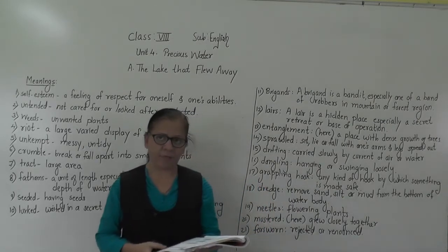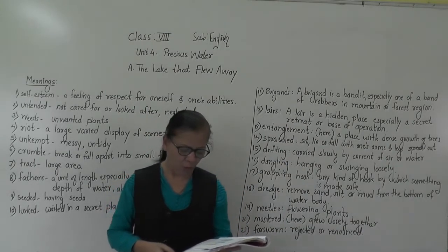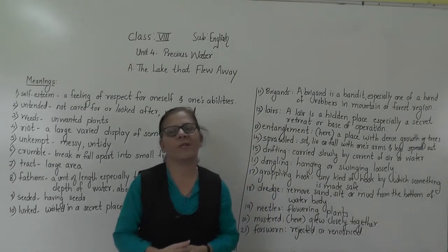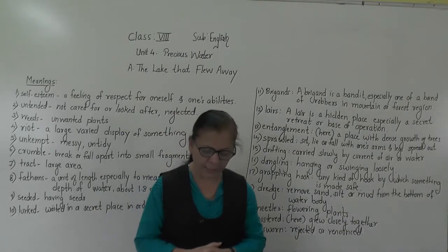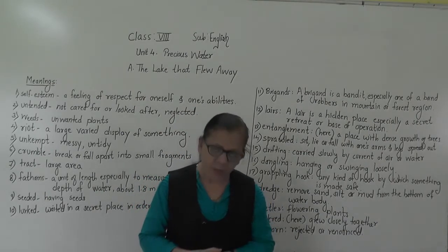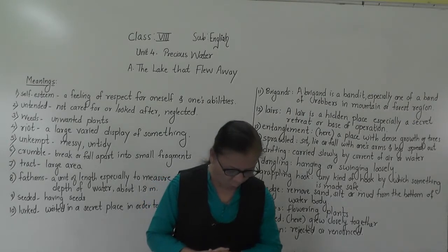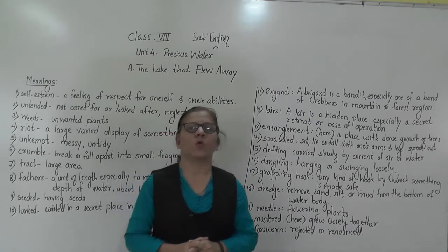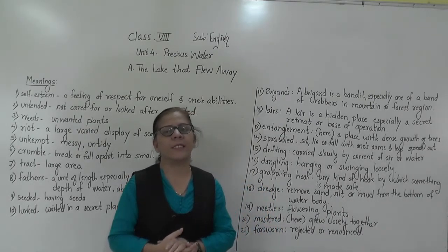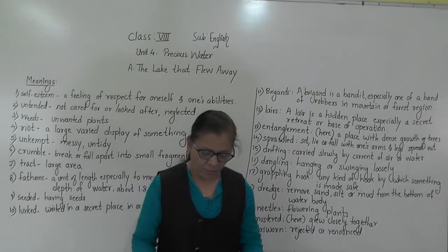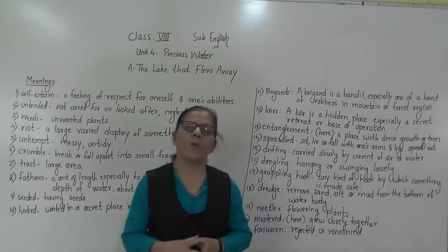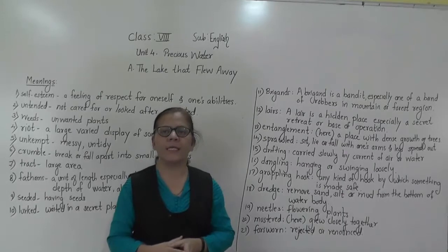So let us see the first question: What is the percentage of earth's water that is fresh potable water? As given, it is 2.5%. The second question is: What percentage of the potable water is easily available to sustain life? From the diagram, it is 1.2% — 1.2% of potable water is easily available.